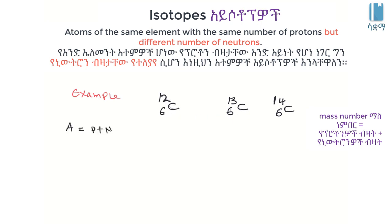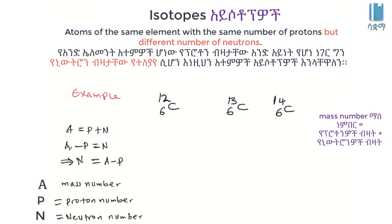The mass number is equal to the atomic number of protons. This is the number of protons and neutrons. So the mass number A is the mass number, P is proton, and N is neutron.